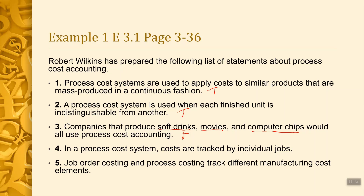Statement four: in a process cost system, costs are tracked by individual jobs — that is also false. In a job order cost system, costs are tracked by individual jobs, not in process costing. Statement five: job order costing and process costing track different manufacturing elements — that is false, because we already learned that both systems track the same three manufacturing costs: direct materials, direct labor, and manufacturing overhead.